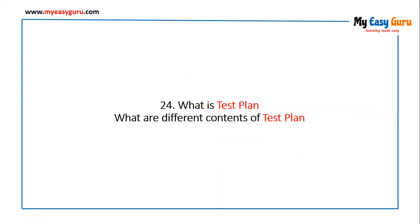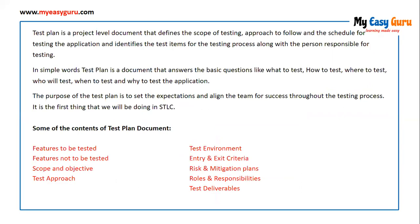What is a test plan and what are its different contents? A test plan is a project-level document that defines the scope of testing, the approach to follow, and the schedule for testing the application. It identifies the test items and the persons responsible for testing. In simple words, a test plan answers: what to test, how to test, where to test, who will test, when to test, and why to test. Its purpose is to set expectations and align the team for success throughout the testing process.